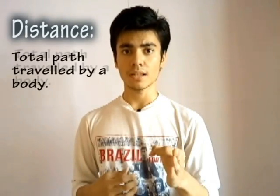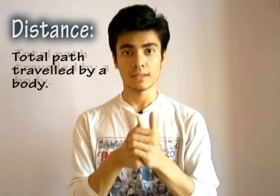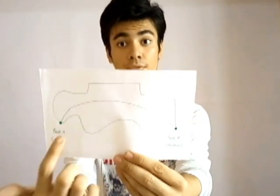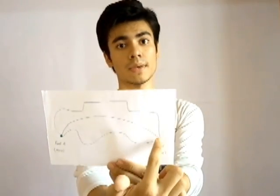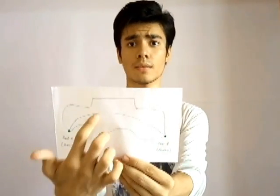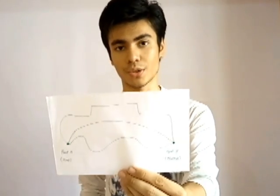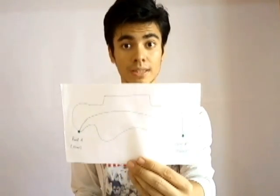So the total path traveled by me is the distance. If you take the example of this chart and consider point A as our home and point B as the market, there are a variety of ways — in this case, three ways — in which you can reach the market. These total path lengths are the distances.